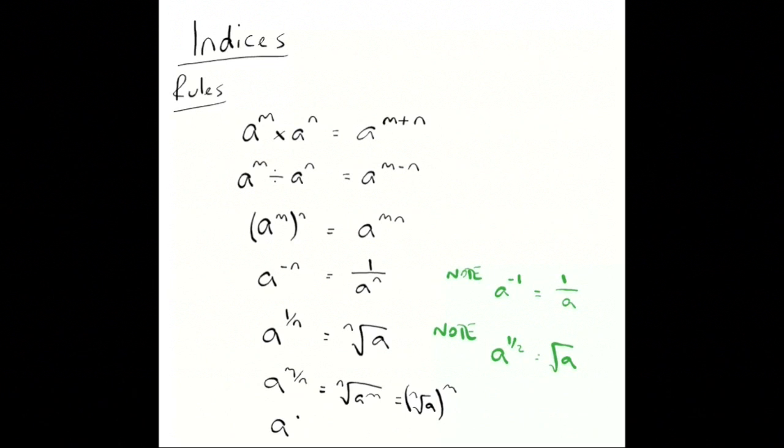Another one we've got is a to the zero equals one. And that works for almost every a. The only one that doesn't work with is zero.